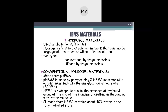Conventional hydrogel material is made from HEMA — polymerized with a cross-linking agent such as ethylene glycol dimethacrylate (EGDMA). HEMA is hydrophilic due to the presence of a hydroxyl group at the end of the monomer, resulting in bonding with water molecules. Contact lenses made from HEMA contain about 40% water in the fully hydrated state.